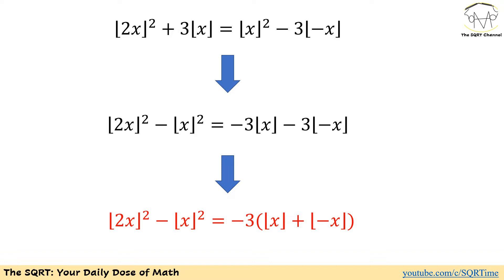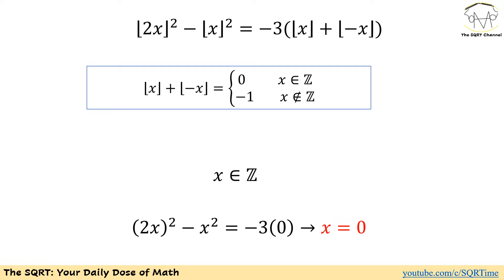I'm sure you are seeing some pattern here. We have floor of x plus floor of negative x, and this expression itself can be simplified. Obviously, if x is an integer, then floor of x and floor of negative x are going to be just x and negative x. If you add them together, you will get 0.